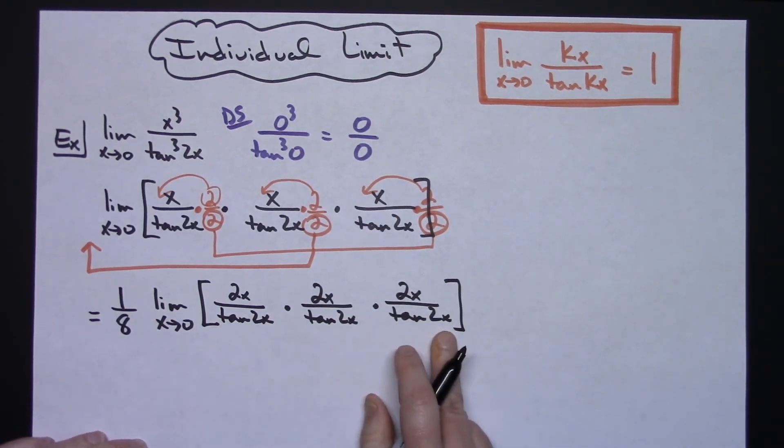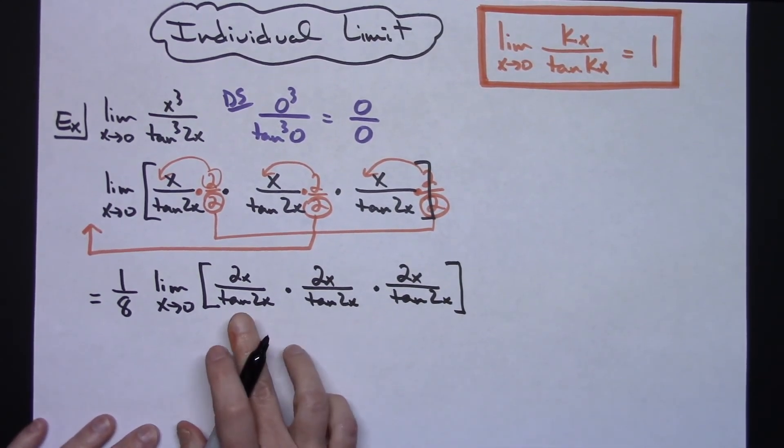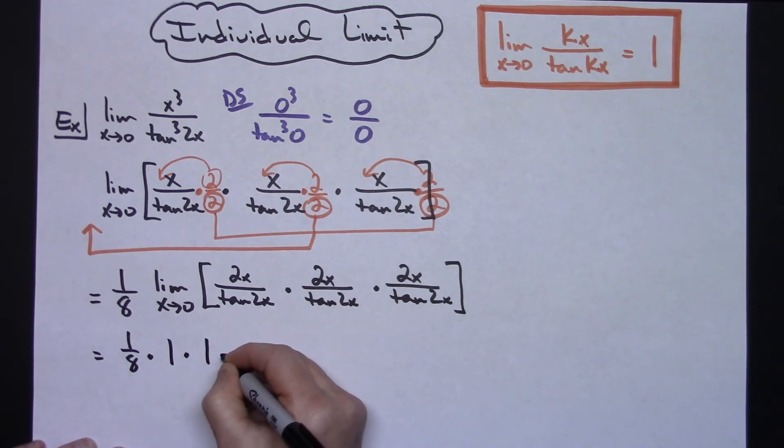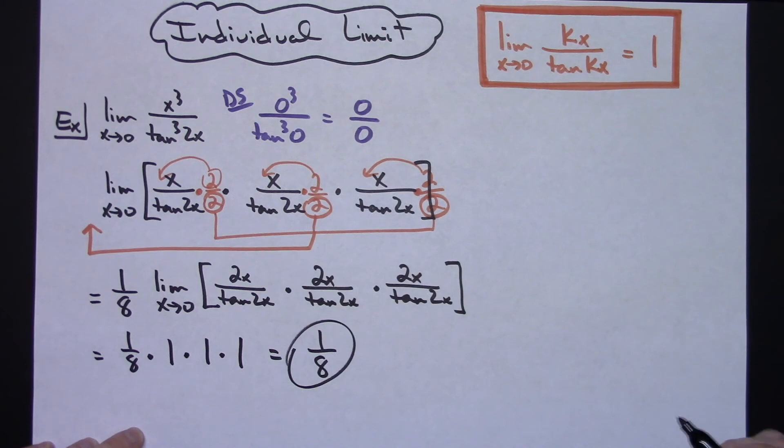I can take the limit of each one of these individually. I know this goes to 1, this goes to 1, and this goes to 1, so I have 1/8 times 1 times 1 times 1, which gives me just an overall answer to the limit as 1/8.